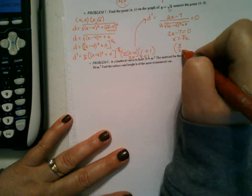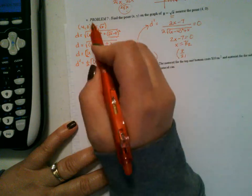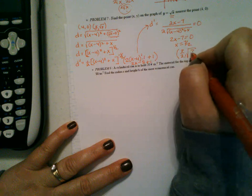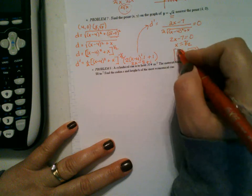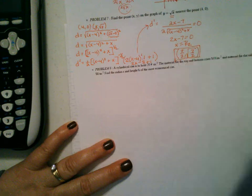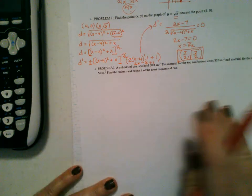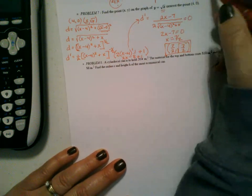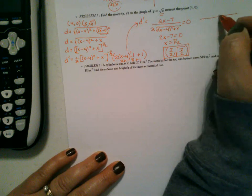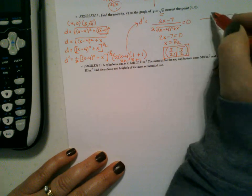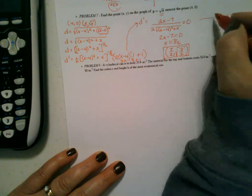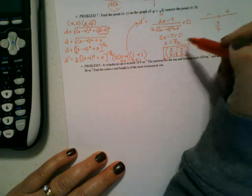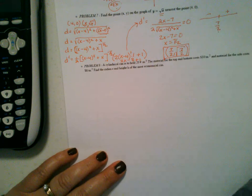Set D' equal to zero — the numerator equals zero — so 2X − 7 = 0, giving X = 7/2. My Y value is the square root of 7/2, and you can leave it in that form without converting to a decimal. I didn't do the number line test here, but had I done it, it would show minus then plus, confirming a minimum. When you only get one answer, you don't have to worry about that step.